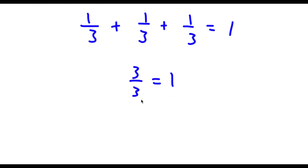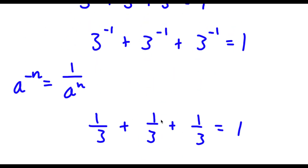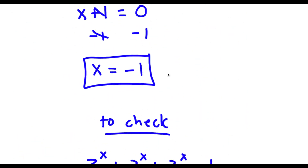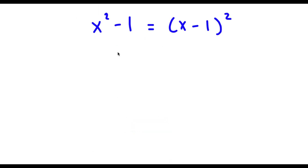3 divided by 3 is 1, so I have 1 = 1, which confirms my solution is correct. Alright, the next problem: I have x² - 1 = (x - 1)², and I want to find the value of x.